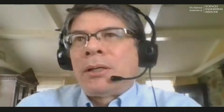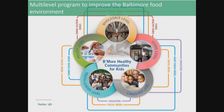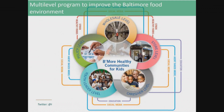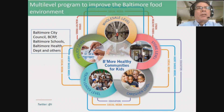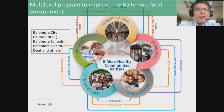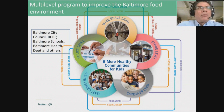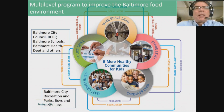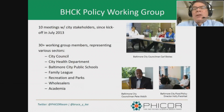As Bruce has alluded to, the Global Obesity Prevention Center funded a large intervention program in Baltimore City called Be More Healthy Communities for Kids, with the overall goal of improving the food environment. This complex intervention trial included wholesale, food store, caregiver, youth leader, and policy-level components. The policy piece included the Be More Healthy Communities for Kids policy working group, with stakeholders including the city food policy director, food resilience planner, members of the city council, the city health department, city schools, the family league, recreation and parks, and academic researchers.